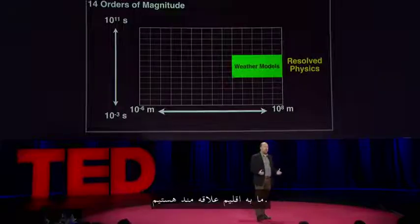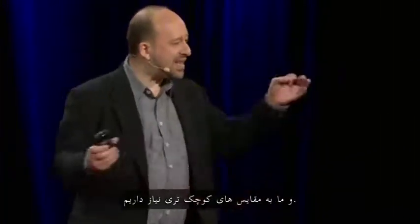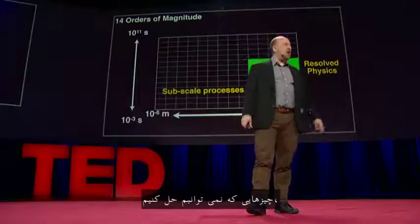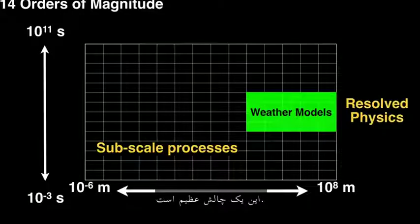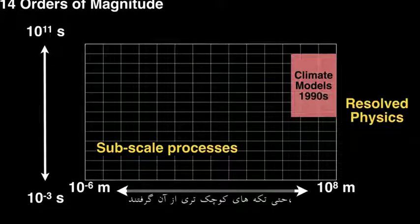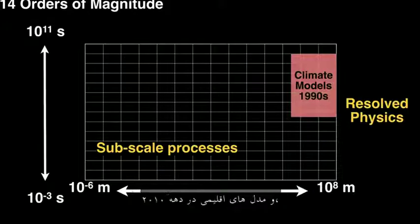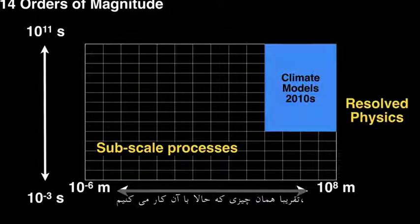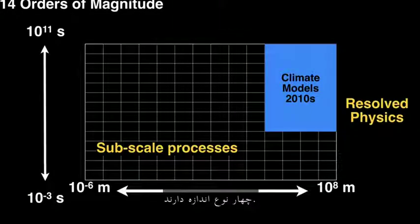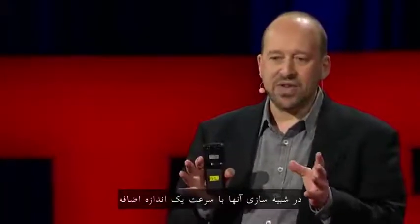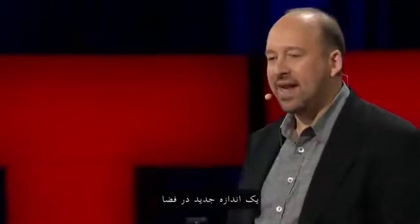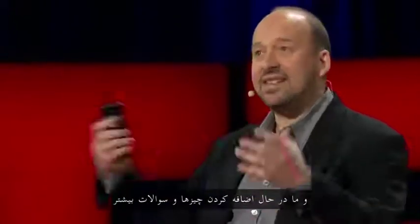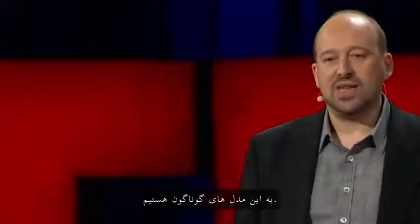We're interested in more than that — we're interested in the climate. That's years, that's millennia, and we need to go to even smaller scales. The subscale processes we can't resolve, we need to approximate in some way. That is a huge challenge. Climate models in the 1990s took only about three orders of magnitude. Climate models in the 2010s, kind of what we're working with now, four orders of magnitude. We have 14 to go, and we're increasing our capability at about one extra order of magnitude every decade.